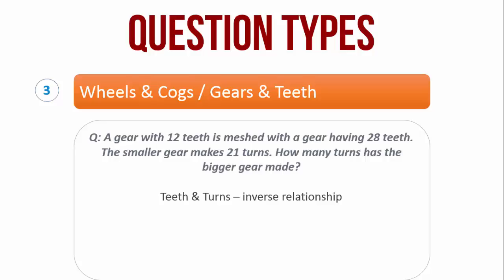It is important to remember that, when 2 gears are meshed, teeth and turns have an inverse relationship. That is, if g is the number of teeth and t is the number of turns, then g1 to 1 by t1 is as g2 to 1 by t2.